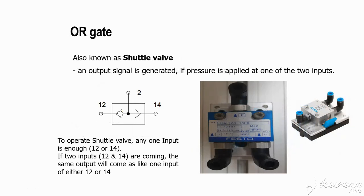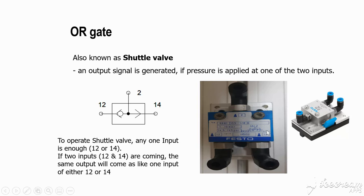The OR gate valve works on a different principle: any one signal is sufficient. When you apply air to either input, or to both, the air transfers to the outlet. Although the AND gate and OR gate valves look physically similar, they operate completely differently. A symbol is pasted on top of the valve so you can identify which type it is.